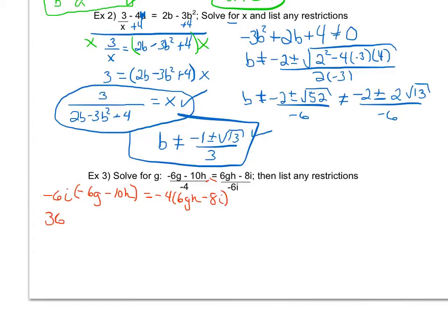Distributing I get 36gi plus 60hi equals negative 24gh plus 32i. So now I want to get anything, since I'm solving for g, that contains a g on one side and anything that does not contain a g on the other side. So I'm going to go ahead and subtract the 60hi from both sides, and I'm going to go ahead and add the 24gh to both sides. Doing that, I do not have like terms, since this has a gi and this has a gh, so those are going to stay separate.